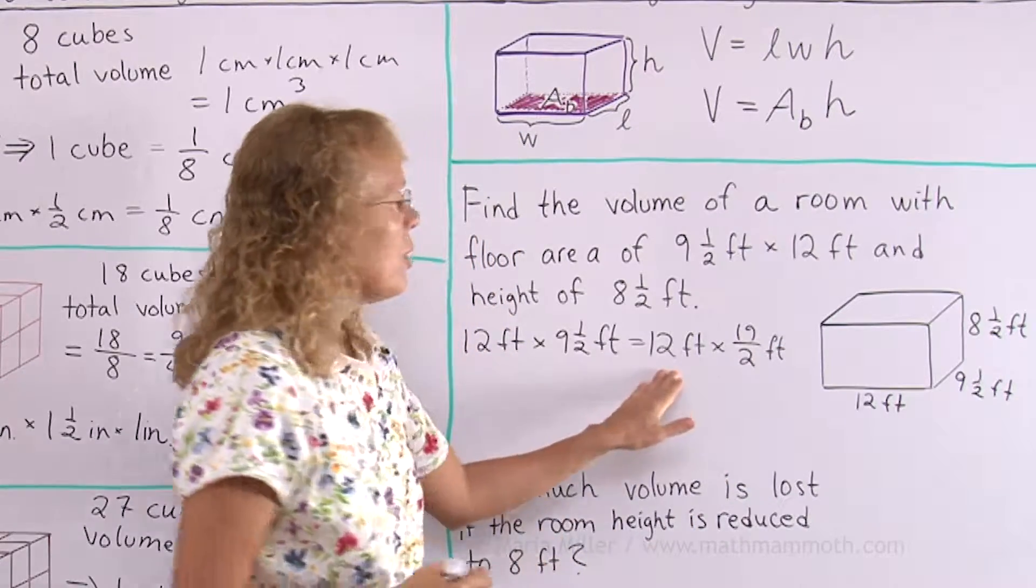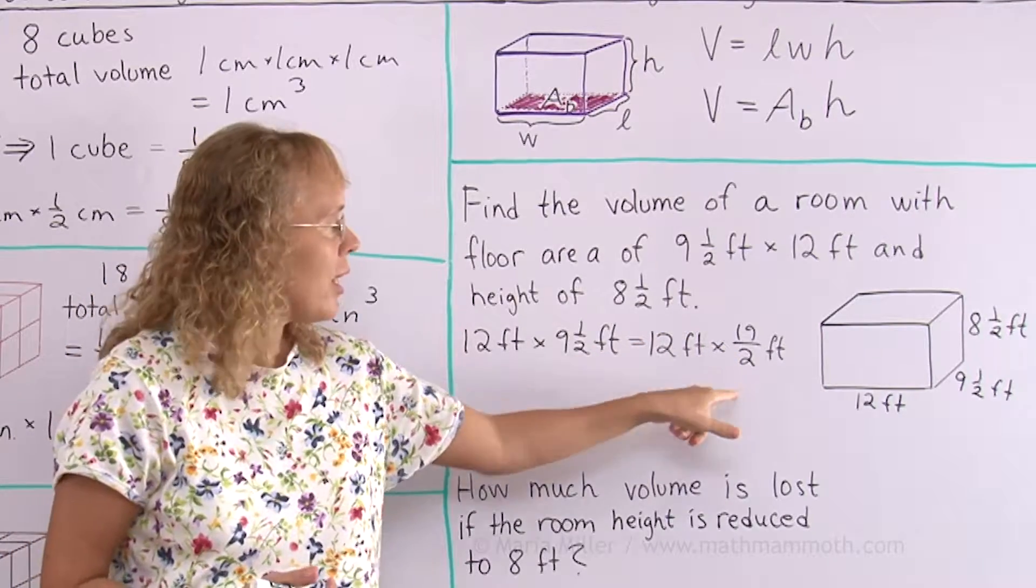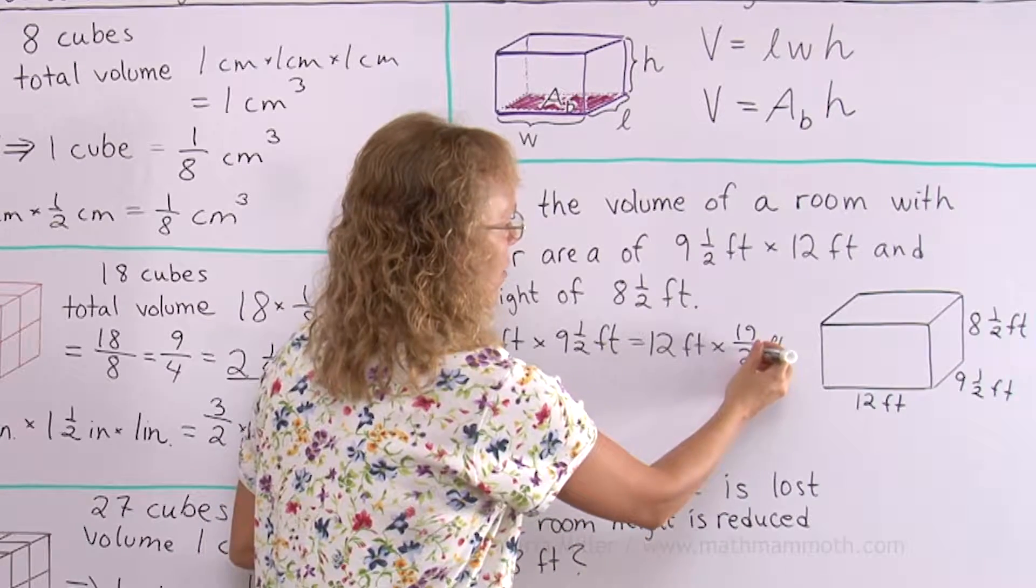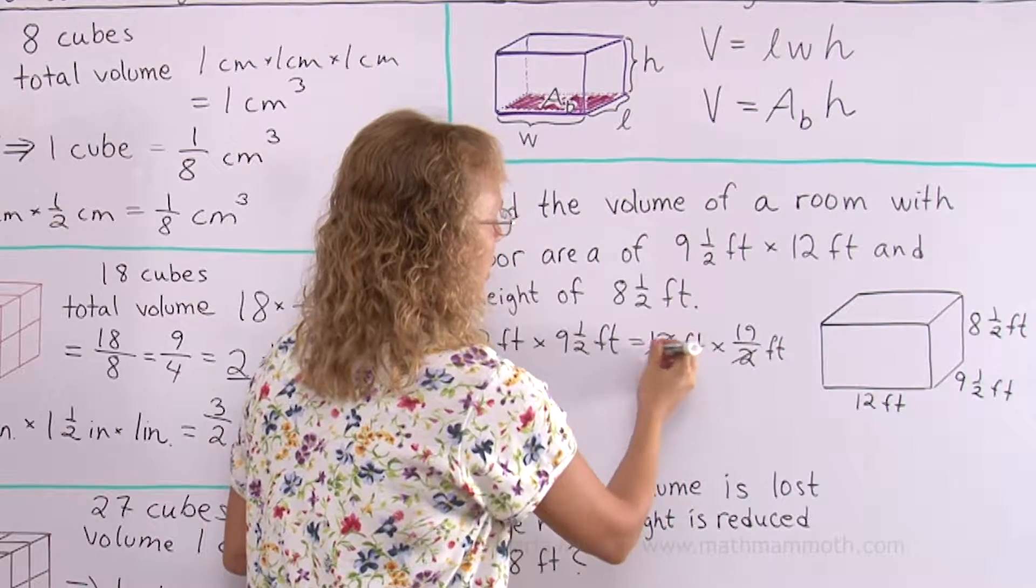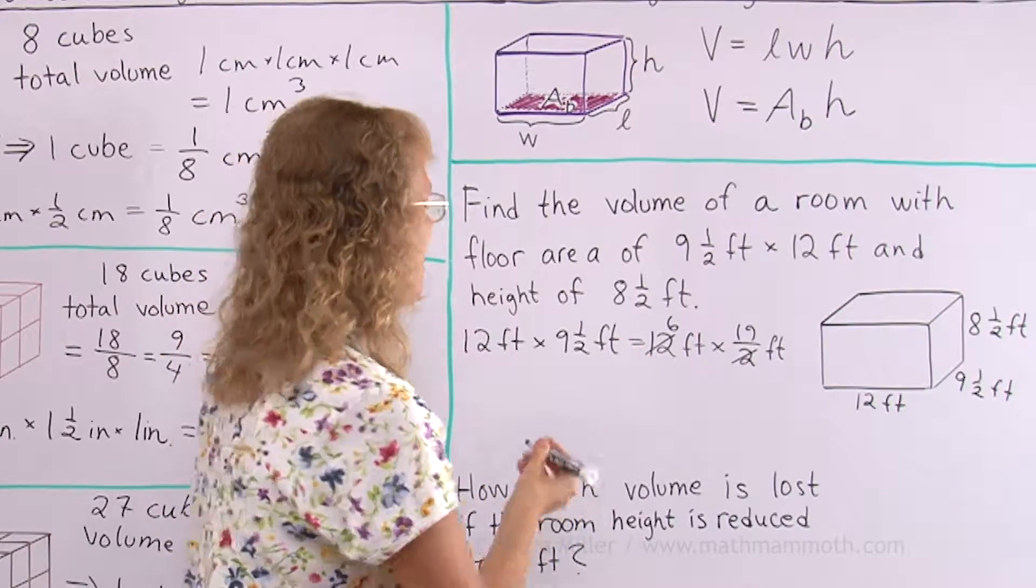I can simplify just a little bit. Because instead of dividing by 2, I can just cancel that and in the beginning multiply by 6. So it's 6 times 19. And that is 60 plus 54. It's 114.